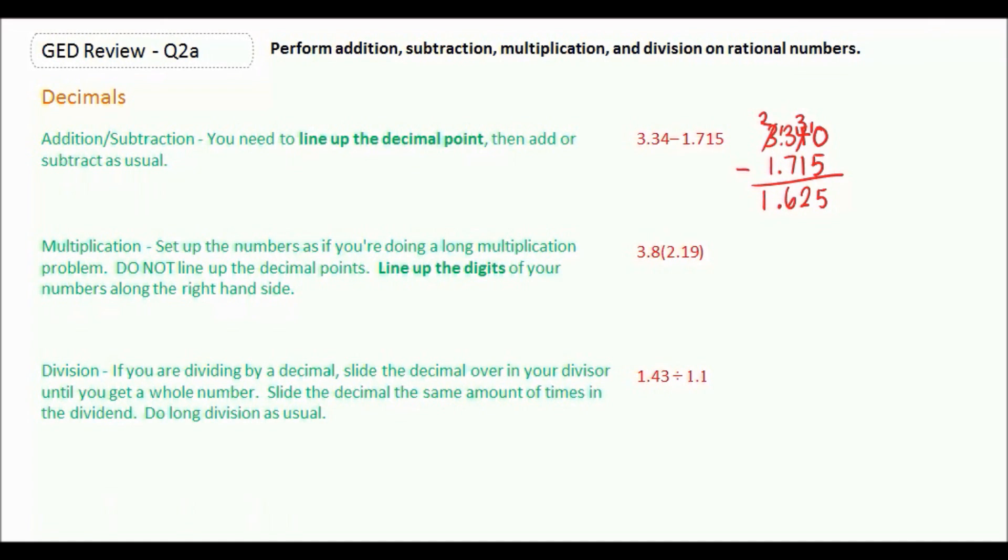For multiplication, we don't want to line up the decimal points. We're going to set up the numbers as if we're doing a long multiplication problem, but line up the digits of your numbers along the right-hand side.